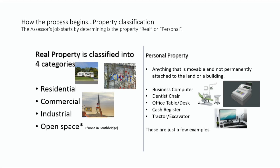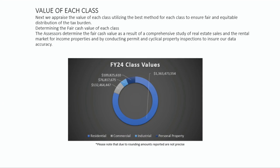Personal property is another tax used by communities. That's everything that any company has, whether it be a computer, dentist chairs, office desks — all of that. There are different criteria for these taxes, whether you're incorporated, an LLC, or a strictly individual. Here's the breakdown: you can see by this graph that residential is obviously the big portion of the tax revenues that we collect, and then the others are small.